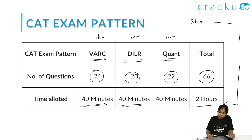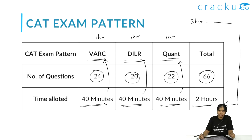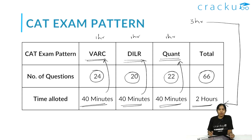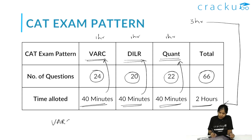You'll have 40 minutes for VARC, then 40 minutes for DILR, and 40 minutes for Quant — totaling two hours. The attempt structure is fixed. Unlike GMAT, you will not get an option to select the order. You must attempt VARC first, then DILR, then Quant.